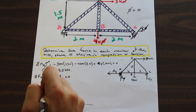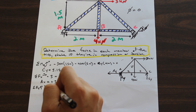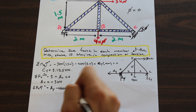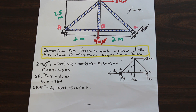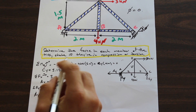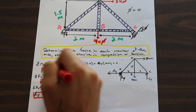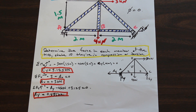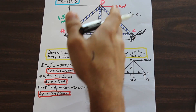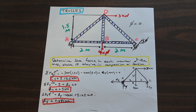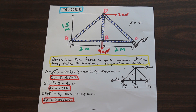Taking the sum of forces in Y — with up as positive — we have AY upward, 4 kilonewtons downward, and CY at 3.125 upward, all equal to zero. That gives AY equal to 0.875 kilonewtons. We've now found all the reactions. There are two ways to solve a truss: the joint method and the method of sections, which is a shortcut. We'll do the joint method first, as it's the fundamental approach.